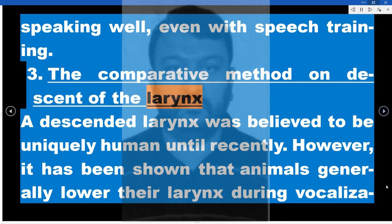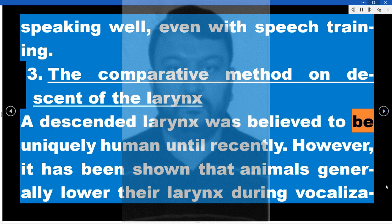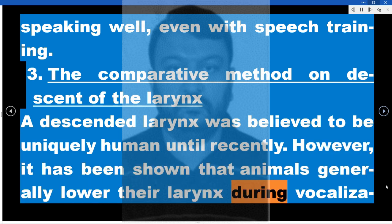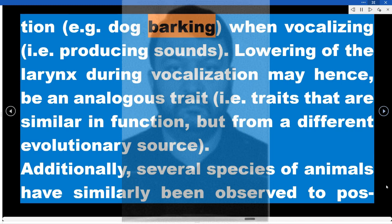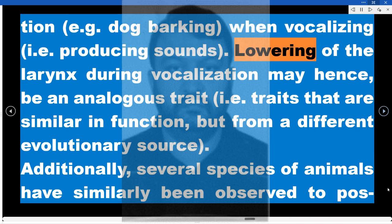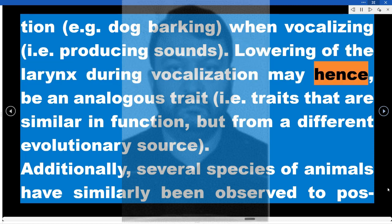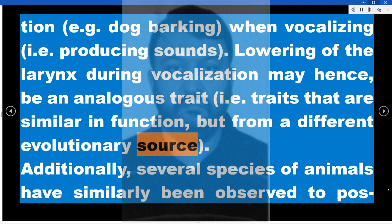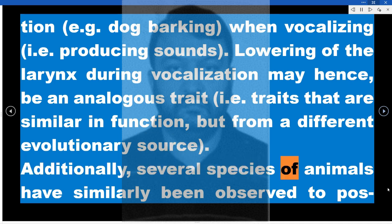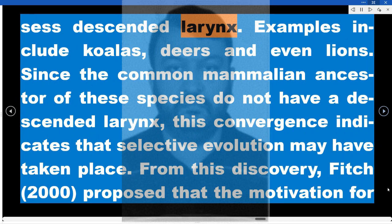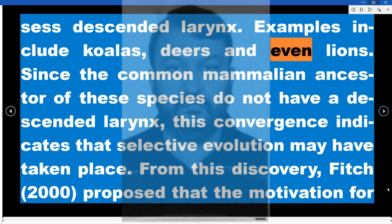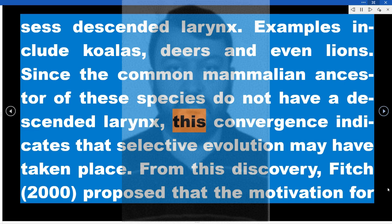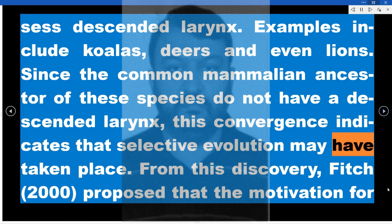A descended larynx was believed to be uniquely human until recently. However, it has been shown that animals generally lower their larynx during vocalization — for example, dog barking. Lowering of the larynx during vocalization may hence be an analogous trait, i.e., traits that are similar in function but from a different evolutionary source. Additionally, several species such as koalas, deer, and even lions have been observed to possess a descended larynx. Since the common mammalian ancestor of these species does not have a descended larynx, this convergence indicates that selective evolution may have taken place.